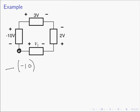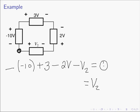It's a minus negative 10. Next polarity marking we come to is a plus sign — plus 3 volts. The next polarity marking is a minus, and then it's 2 volts: minus V2 equals zero. So evaluating this and solving for V2: minus and minus 10 is plus 10, plus 3 is 13, minus 2. That is 11. So V2 ends up being 11 volts.